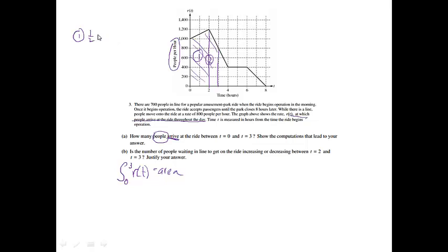So trapezoid 1 is going to be 1 half. The height is going to go from 0 to 2, so the height will be 2. Base 1 will be 1,000 and base 2 will be 1,200. If I work that out, that will turn out to be 2,200.